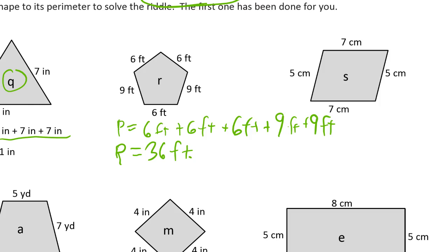For S we've got two fives and two sevens. P equals 5 centimeters plus 5 centimeters plus 7 centimeters plus 7 centimeters. We have two fives for a 10 and two sevens is 14. So 10 and 14 is 24 centimeters.